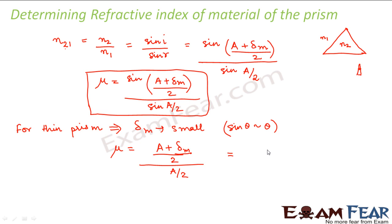So this becomes equal to (a plus delta m) divided by a, or we can say that mu a is equal to a plus delta m, or delta m is equal to (mu minus 1) into a. So for thin prisms, the angle of minimum deviation can be related to the refractive index and the angle of the prism in this way.